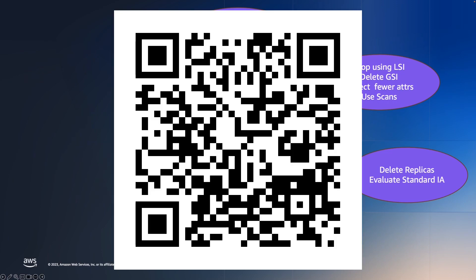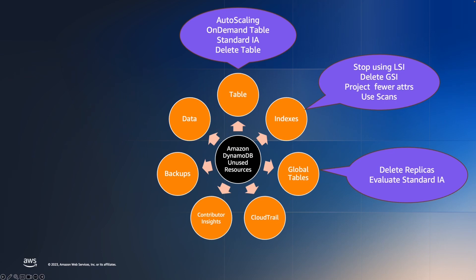There is also a nugget on the standard IA table class — the link is under the captions for more reading. Go ahead and double-check your organization's DR policies, because in some cases customers use global tables for DR purposes. The next area is unused CloudTrail for DynamoDB events, which was launched in 2021. CloudTrail can capture DynamoDB data events, which get delivered to Amazon S3. This cost is calculated per the number of DynamoDB data events, so if your traffic grows higher, this cost can increase and become very significant.